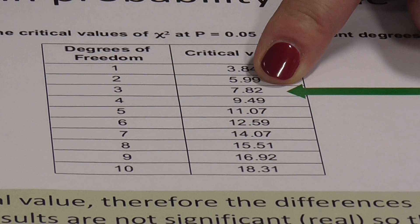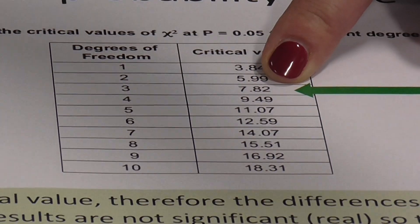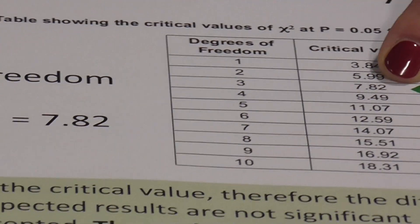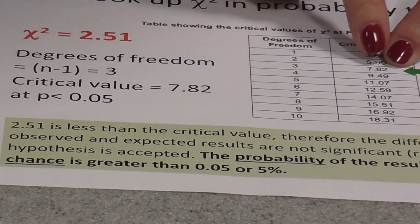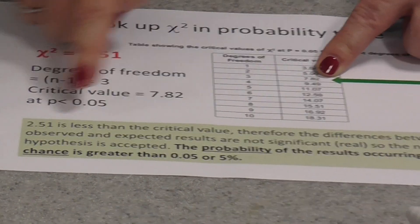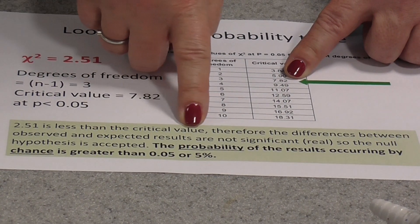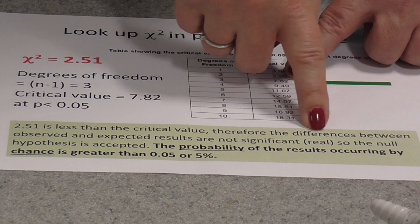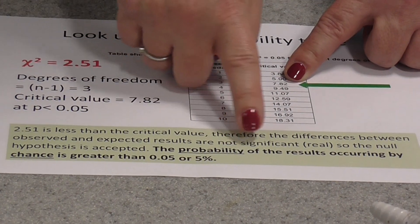Now we are going to compare our chi-squared result to that critical value to see if it's higher or lower. Now if our critical value of 2.51 is lower than the value in the table here, it tells you what to do with it. So 2.51 is less than the critical value. Therefore the differences between the observed and expected results are not significant.